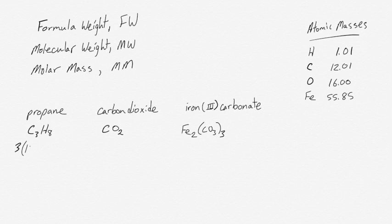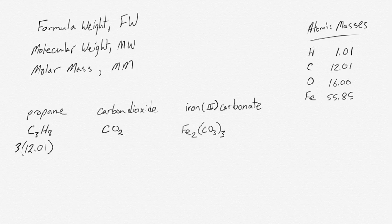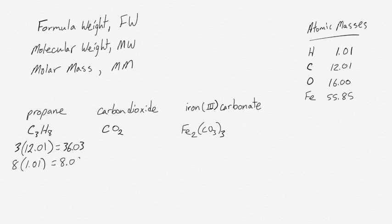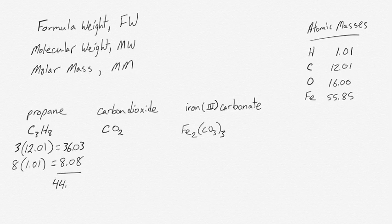So what you do is you have three times the weight of each carbon atom. Each carbon atom weighs 12.01, so you have 36.03. You have eight times 1.01, the mass of hydrogen, so you have 8.08. And you add all of those values together, and you end up with 44.11.